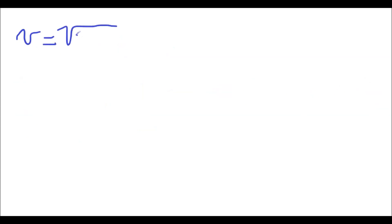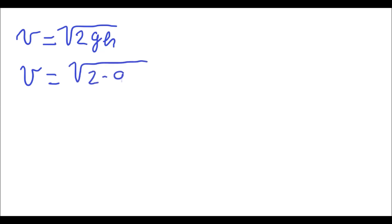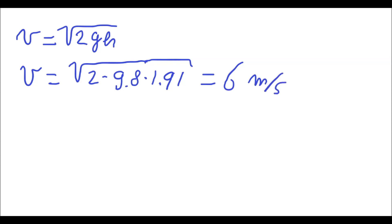If you make these equal each other, you can get the velocity. The formula would be the square root of 2 times gravitational acceleration times height. Therefore, its velocity is 6 metres per second.